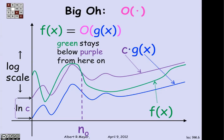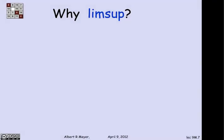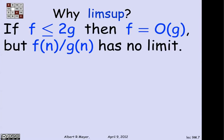So using this standard definition, I can explain why in the equivalent definition in terms of limit, I couldn't say limit, I needed to say limsup. Here's what limsup does for us. Suppose I have a function f that's less than or equal to 2g, which means that surely f is big O of g according to the previous definition, because you amplify g by 2 and you get above f. The problem is that f of n over g of n may have no limit. So I can't simply say that f is O of g because the limit of f over g is finite.